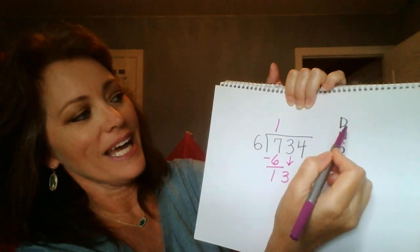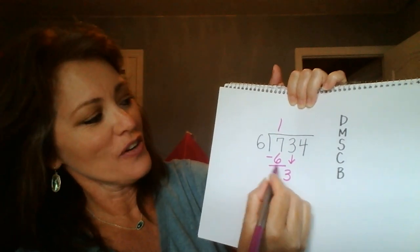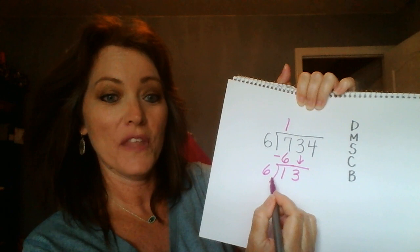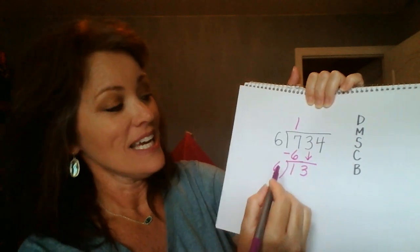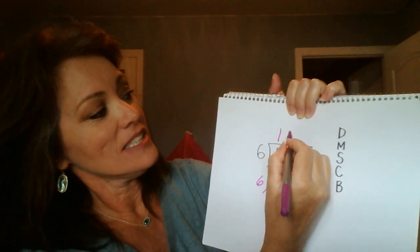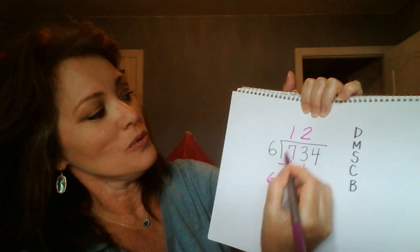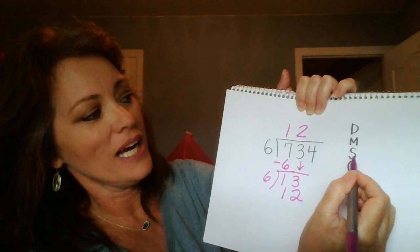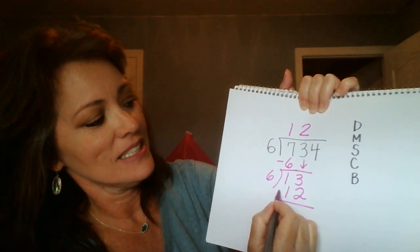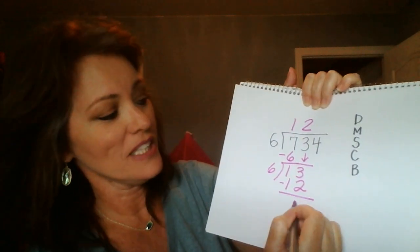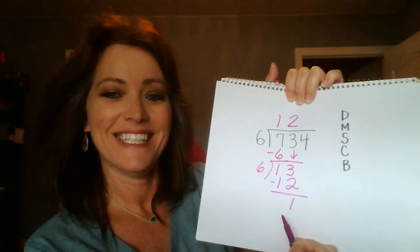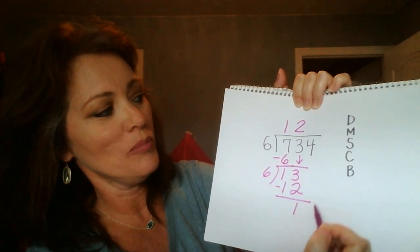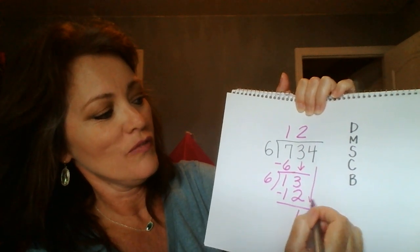Now we're back at divide. 13 divided by 6 — think of multiples of 6. 13 divided by 6 is 2. 6, 12 — so we put a 12 here. Now we're back at subtract: 13 minus 12 is 1. Check that that's less than your divisor — and it is. Now bring down our 4.